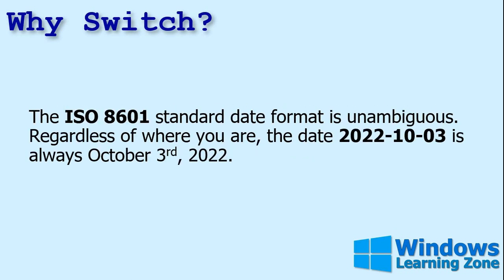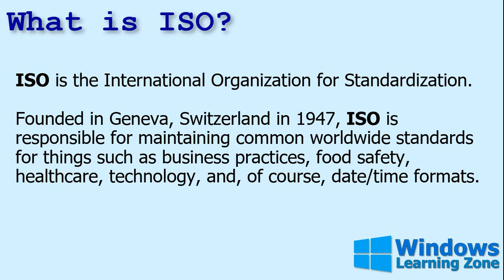The ISO 8601 standard date format is unambiguous regardless of where you are. The date 2022-10-03 is always October 3rd, 2022. You've probably heard of the ISO before — it's the International Organization for Standardization, founded in Geneva, Switzerland in 1947.